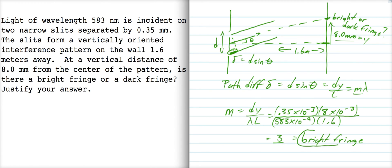Because the path difference here, delta, is equal to three wavelengths, right? And if delta, if the path difference is an integer number of wavelengths, that means you've got constructive interference. Therefore, bright fringe.